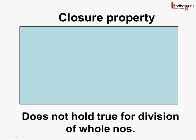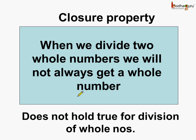So we can say the closure property does not hold true for division of whole numbers. Which means when we divide two whole numbers we will not always get a whole number as the answer.